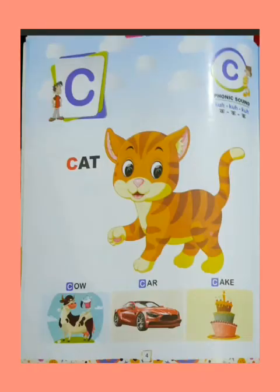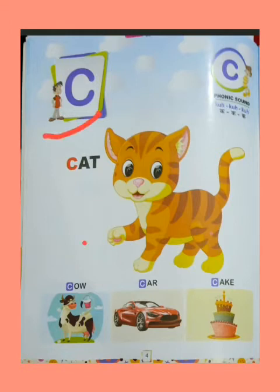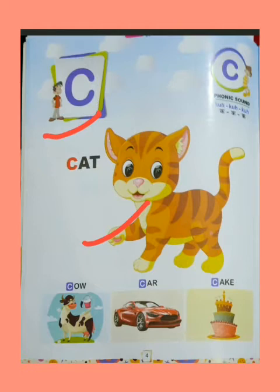Open your book. So you can see on this page. First of all, we learn a phonic sound C. How to speak? Letter C. C. C for cat. Cat means billy. The spelling of cat is C-A-T. Cat.